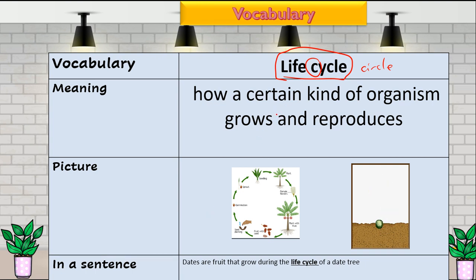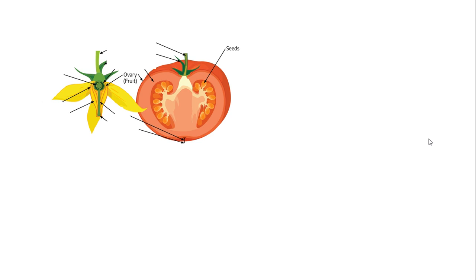A life cycle occurs in both plants and animals — it is how a certain kind of living thing grows and reproduces. Remember, 'reproduce' means to make another of yourself: a plant makes another plant, an animal makes another animal. Inside the flower we have different parts — the male part will mix with the female egg inside of the ovary, and it will then grow into a fruit to protect the seed.